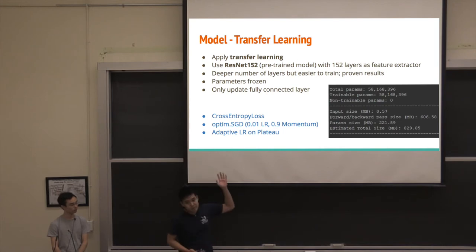So the parameters of the actual ResNet are frozen, a lot of convolutional layers, and the only thing that we actually train on is just a final fully connected layer, which serves as the classifier. Down there, you can see some different parameters and things that we use. So we use cross entropy loss, SGD, you can see the learning rate, momentum. And I'll talk a little bit more about the adaptive learning rate that we use later. It's an 800 plus megabyte model with over 50 million parameters.